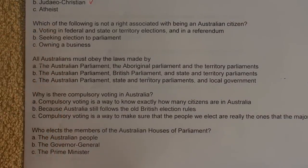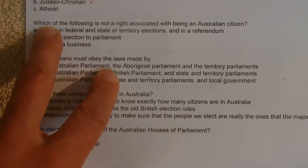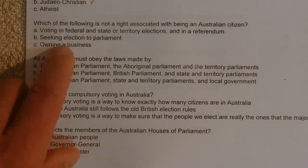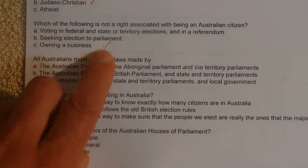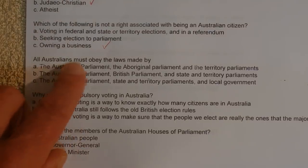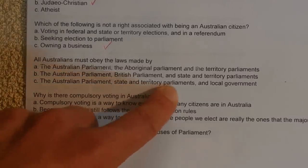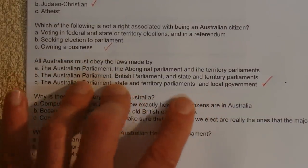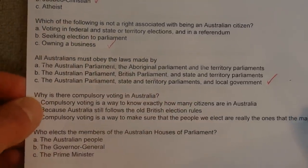Which of the following is not a right associated with being an Australian citizen? Owning a business is not a right — you can vote and seek election, but owning a business is not a right. All Australians must obey the laws made by C: the Australian Parliament, State and Territory Parliaments, and local government. There are three levels of government — federal, state, and local — all involved in different things.